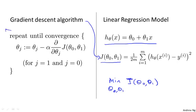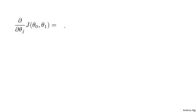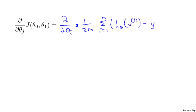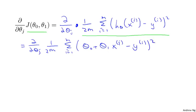Now, in order to apply gradient descent and write this piece of code, the key term we need is this derivative term. We need to figure out what this partial derivative term is, plugging in the definition of the cost function J. This turns out to be the sum from i equals 1 through m of this squared error cost function term — I just plugged in the definition of the cost function. Simplifying a little bit more, this turns out to equal the sum from i equals 1 through m of (theta_0 + theta_1 * x_i - y_i) squared, where I took the definition of my hypothesis and plugged it in.